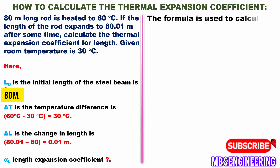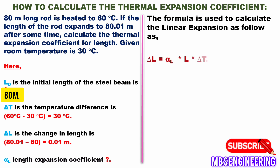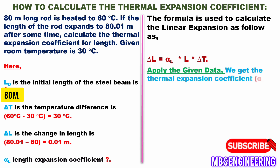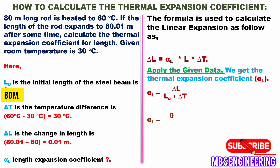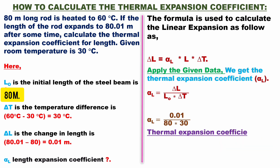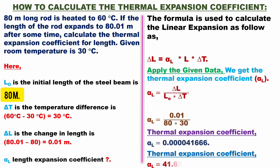Using the formula delta L = alpha_L × L₀ × delta T, rearranging gives alpha_L = delta L / (L₀ × delta T). Substituting: alpha_L = 0.01 / (80 × 30). Therefore, the thermal expansion coefficient alpha_L = 0.000041666, or 41.666 × 10⁻⁶ per degree Celsius.